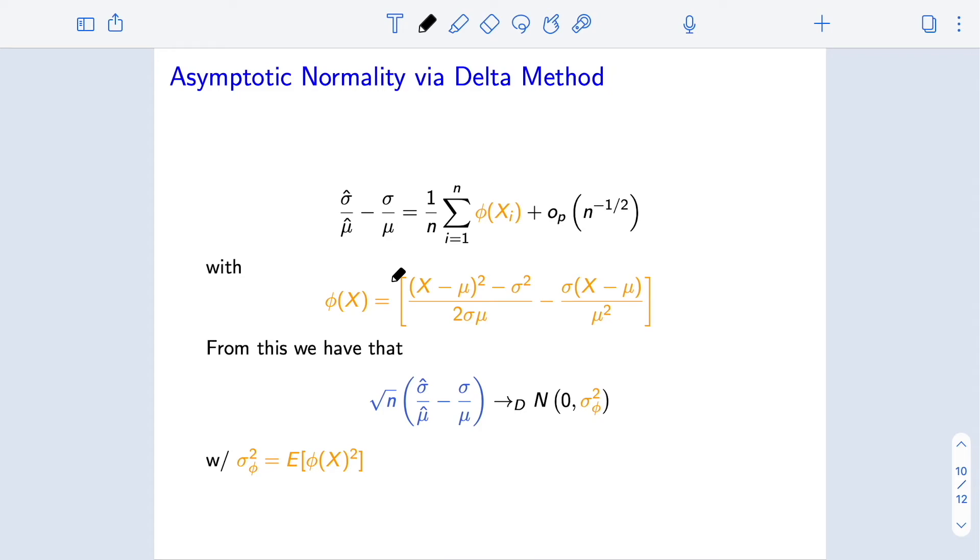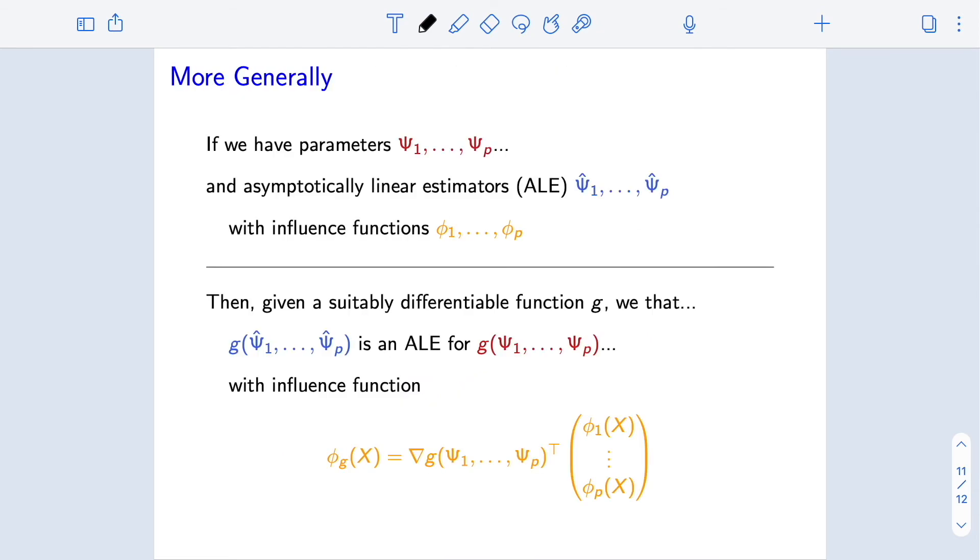From here, we could get confidence intervals for sigma over mu via asymptotic normality. We would have to estimate the variance from the influence function. And to do that, we would need to plug in estimates of these parameters sigma and mu.